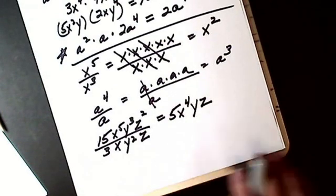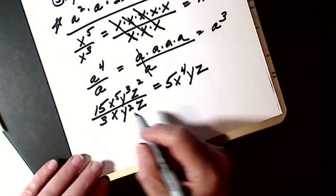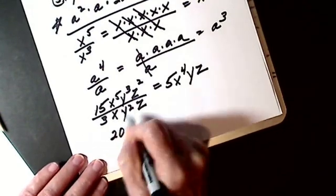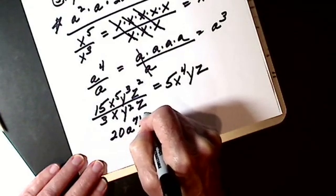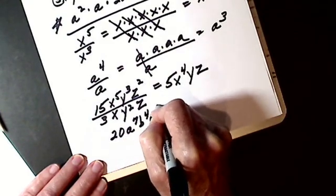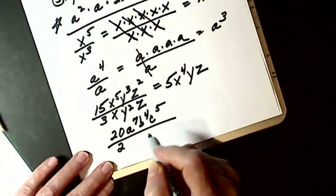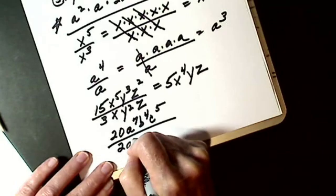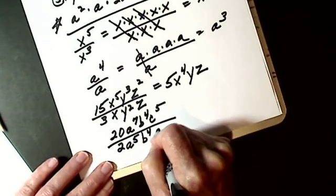Hopefully easy. This is the one people get wrong, so we'll see. Let's make it 20, a to the seventh, b to the fourth, c to the fifth. Divide it by. We'll make it a 2. We'll make it a to the fifth, b to the fourth, c.